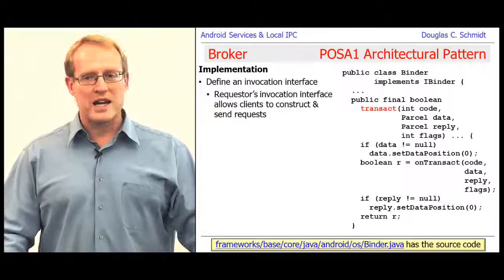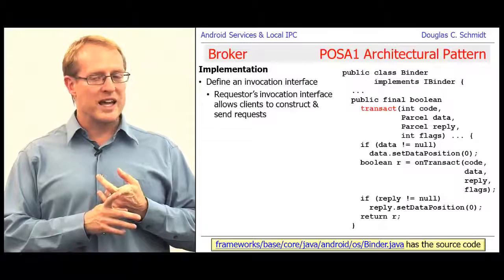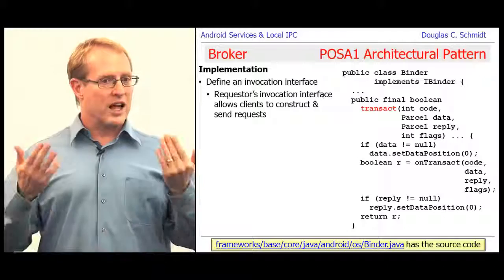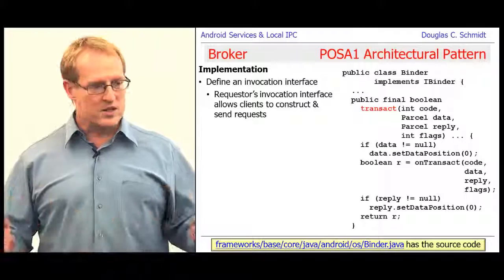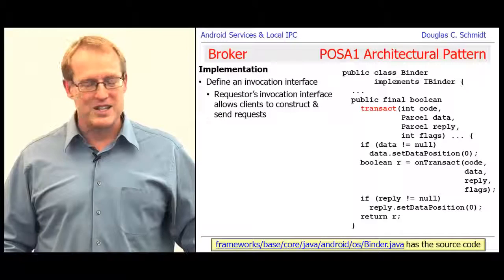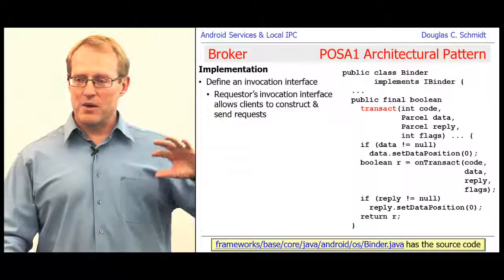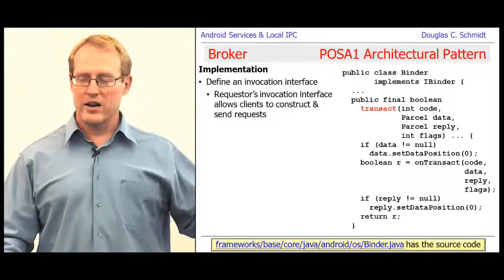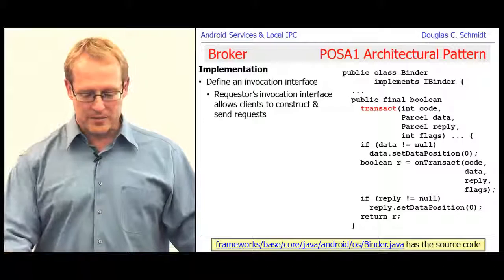The binder provides a method called transact. You call transact with a code — basically the method you're calling — as well as a parcel that contains the data you want sent to the server, and how you want the reply to come back. When somebody calls transact, which is typically the proxy, under the hood it ends up calling the onTransact method. That gets delivered to the server side, where an onTransact method gets called back on the stub. That's how the data gets upcalled to the server.